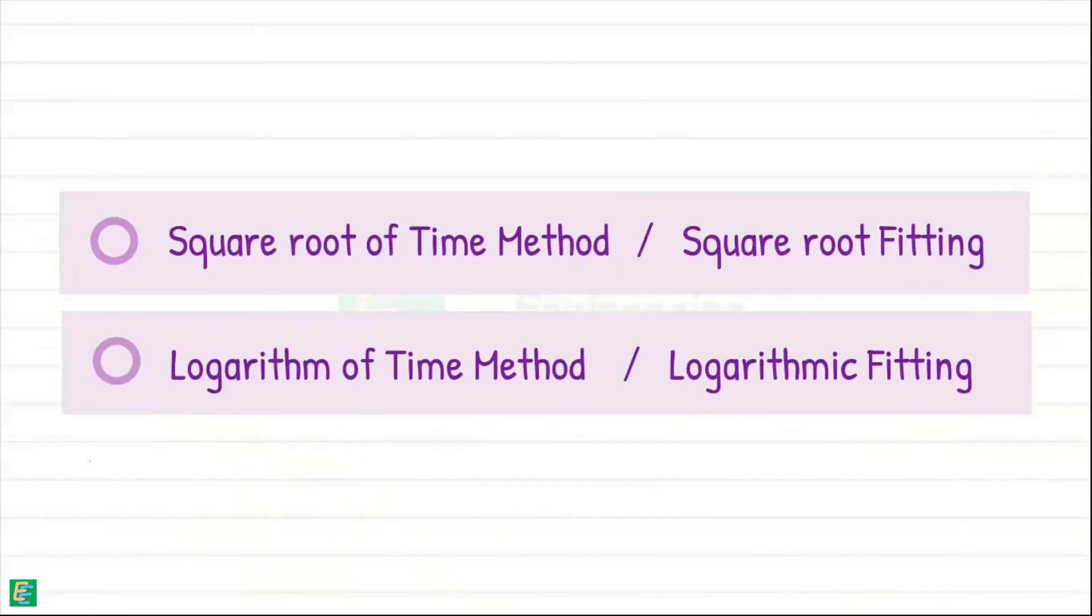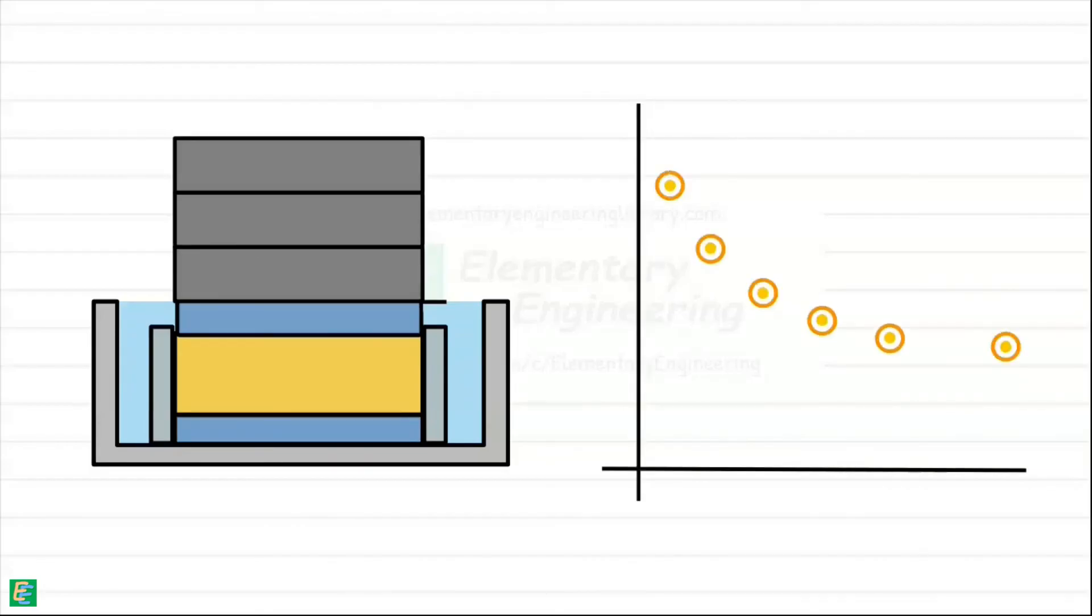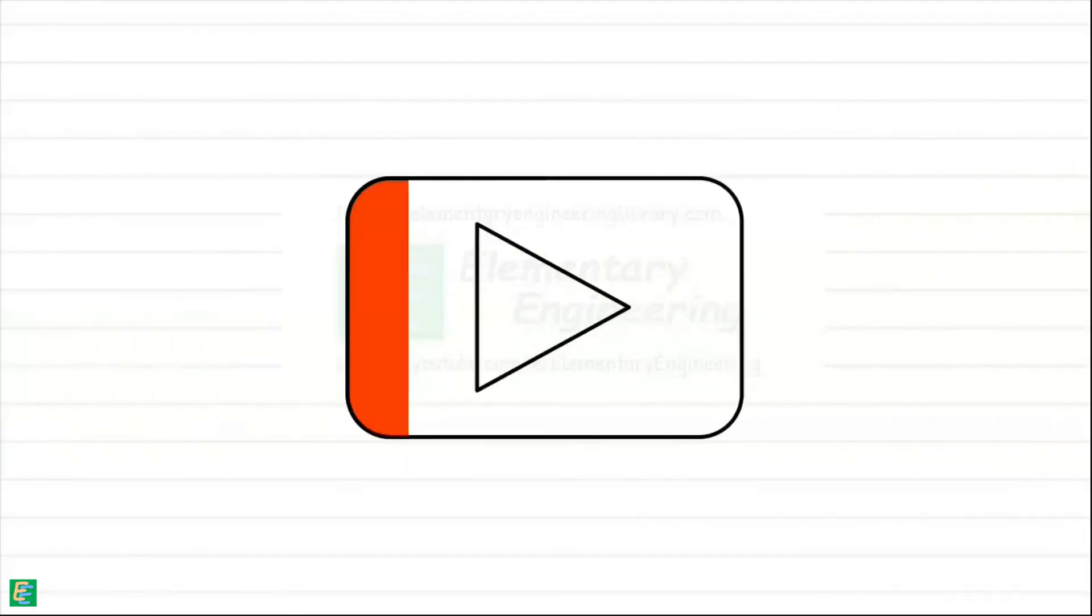We may discuss these approaches in our coming videos, but consolidation test has more to offer. We increase loadings on the consolidation cell and obtain more data, which can help us determine how much compression of soil is taking place because of the applied load by plotting a graph between the void ratio and effective stress. But that is for the next video.